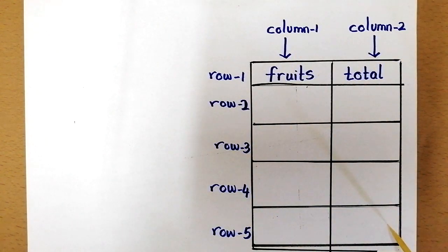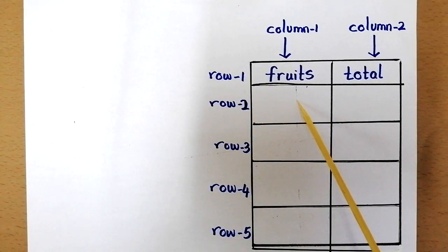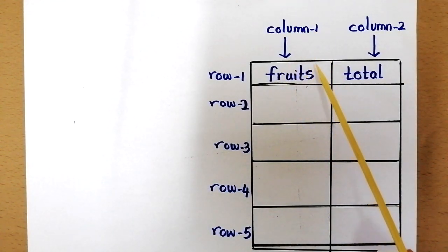This is how a table looks like. Now this table has two columns and five rows. Each box is called a cell.